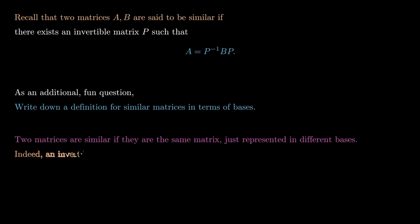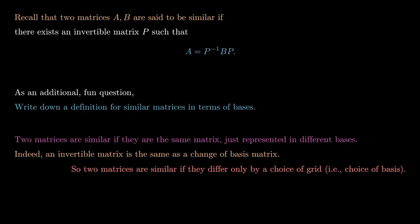Now, an invertible matrix—that's just a change of basis matrix. So two matrices are similar if they differ only by a choice of grid, and that's exactly what a choice of basis is. When you write a